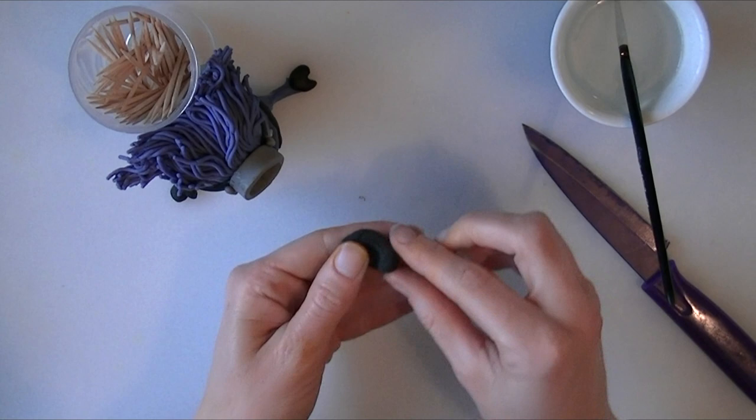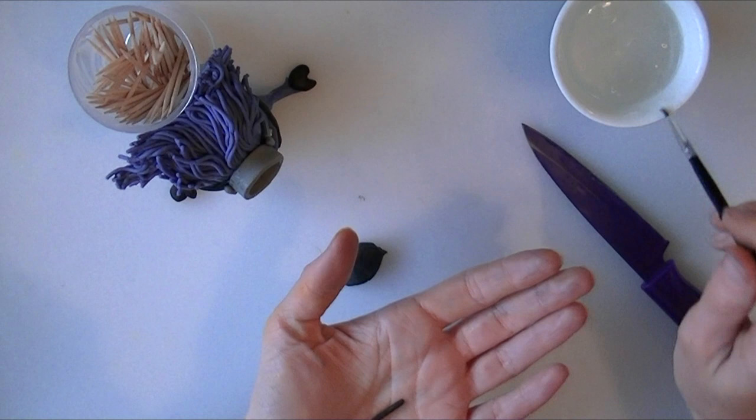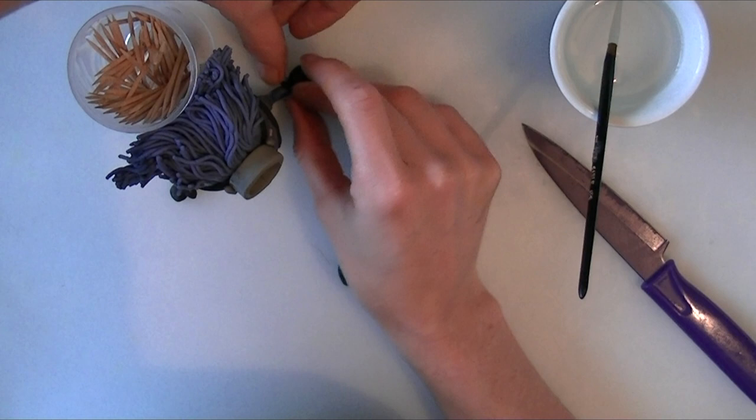What I'm going to do now is just roll a long piece like this, which is going to go round the bottom of the arm to cover up the join where we have stuck them on. That's just going to go around there.